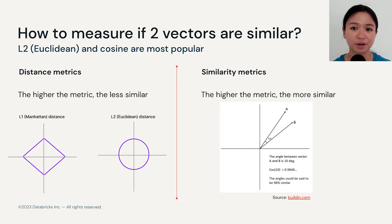But first, let's talk about how do we actually determine if two vectors are similar. The answer is using distance or similarity metrics. This is probably not a very foreign concept to a lot of you.